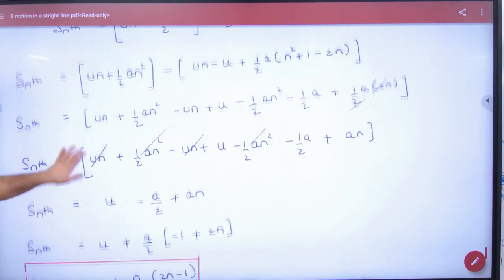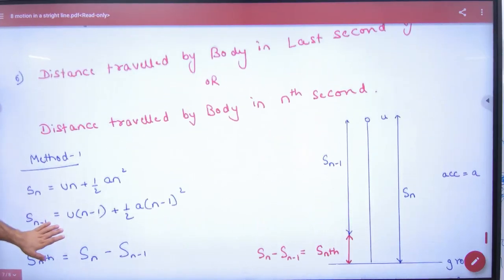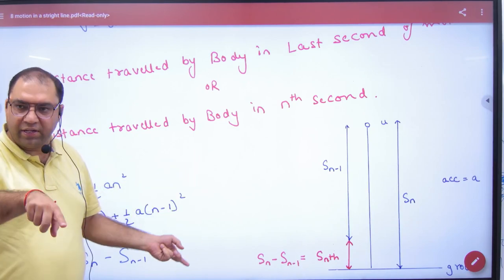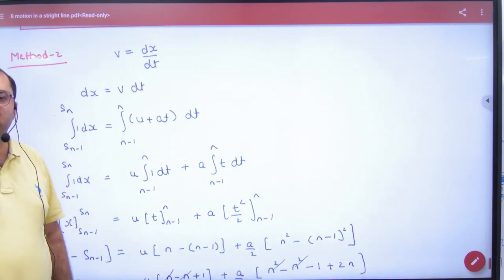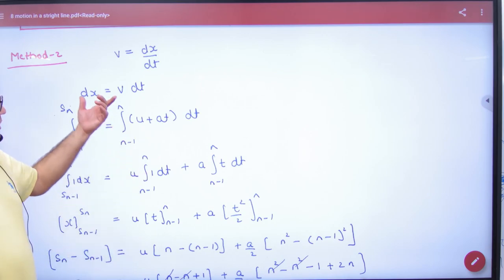So, the expression to find distance travelled by the body in the nth second - we will work for this. What is the velocity at any instant? dx by dt. Cross-multiply.